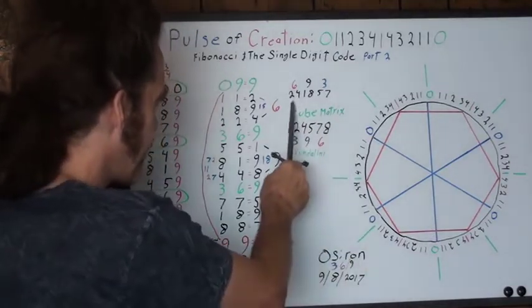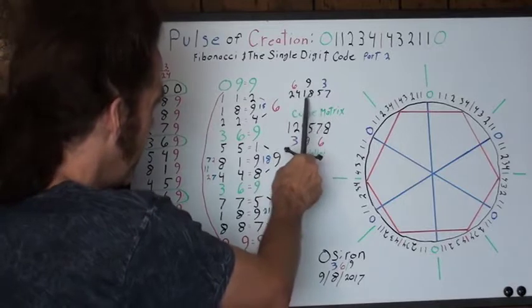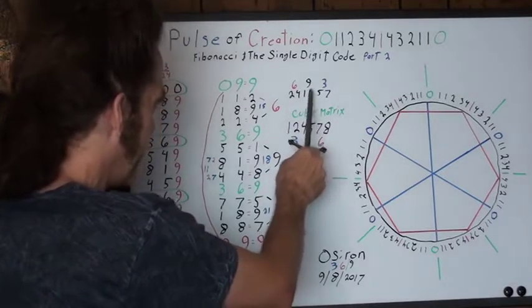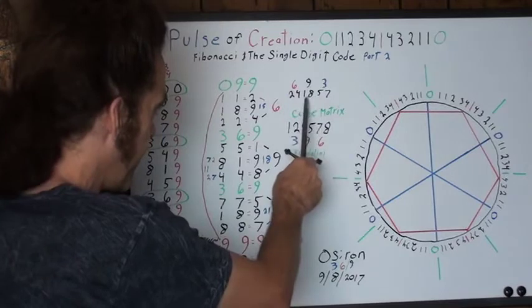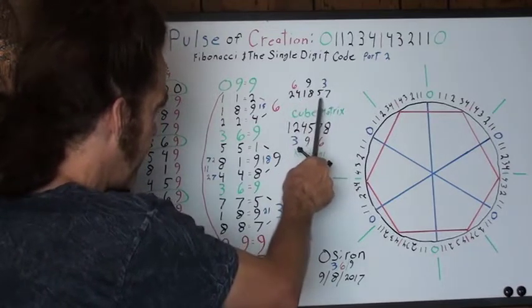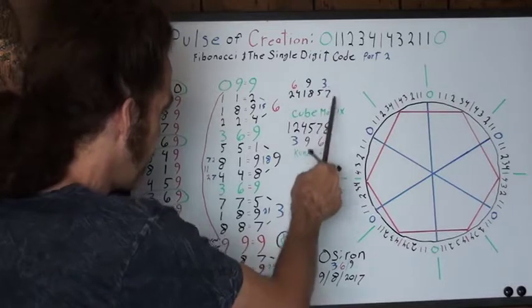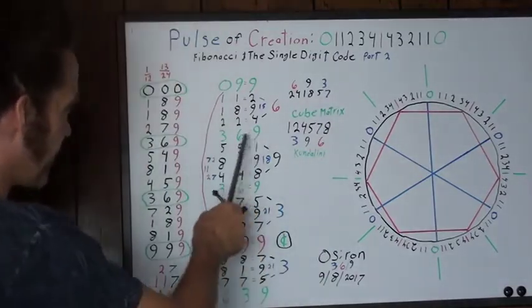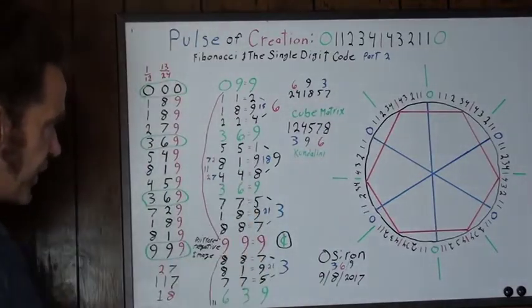The first two are the masculine numbers and become six. The two middle numbers are the one and the eight, and they become nine. And it's masculine and feminine. The ones on the other end are all feminine, and those become three. And this is revealed by half of that code, and the mirror image is on the other side.